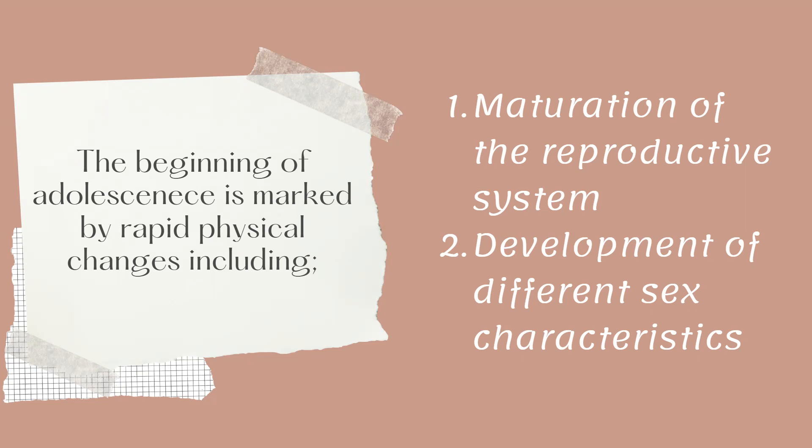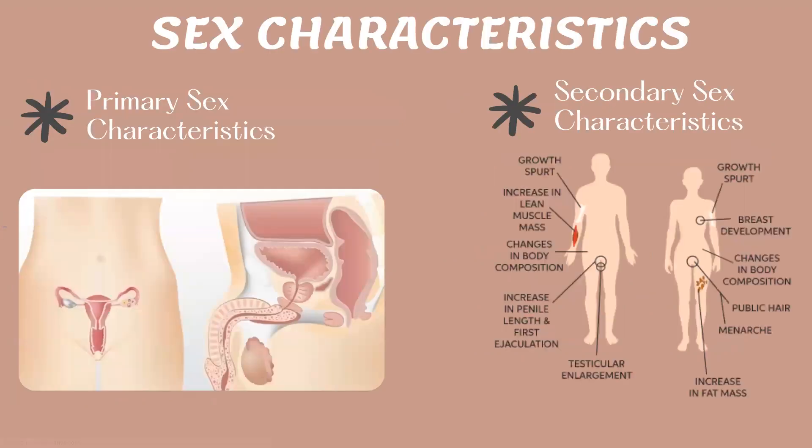We also have the development of different sex characteristics. We observe these when we are adolescents. We have what we call primary sex characteristics and secondary sex characteristics. Primary sex characteristics are the body structures directly concerned with reproduction that allow us to tell males from females, such as the penis in men and the vagina for women.